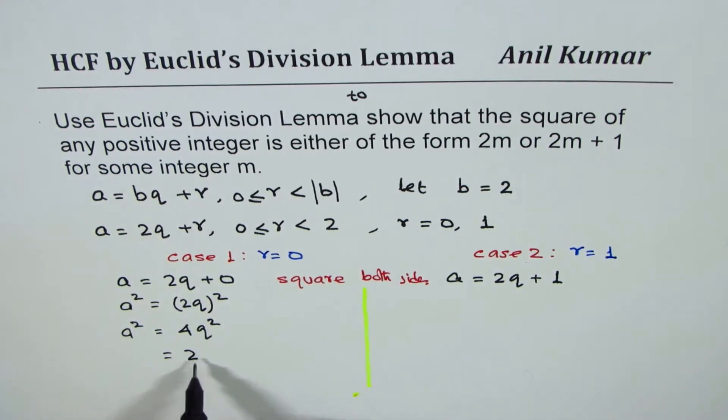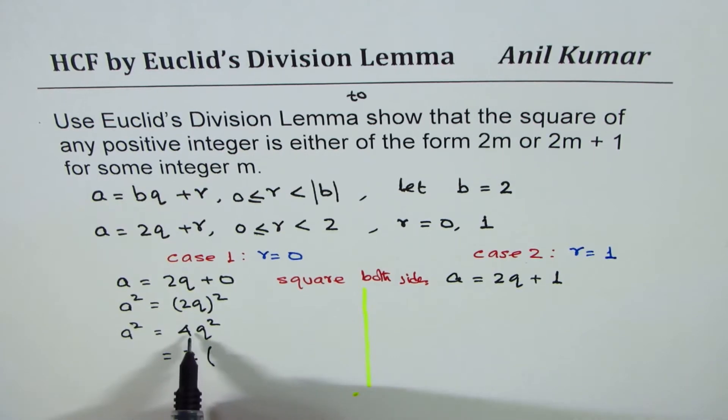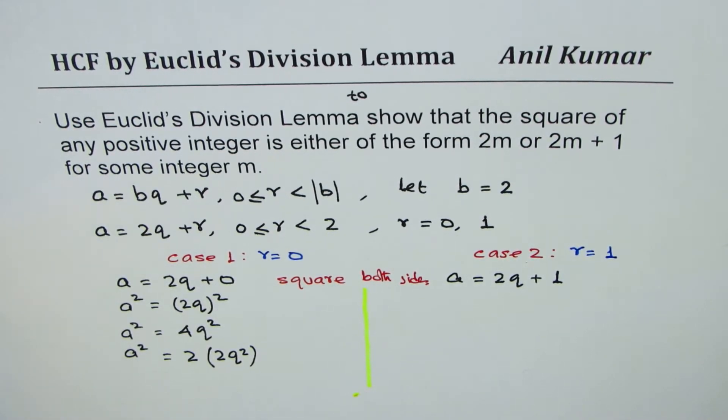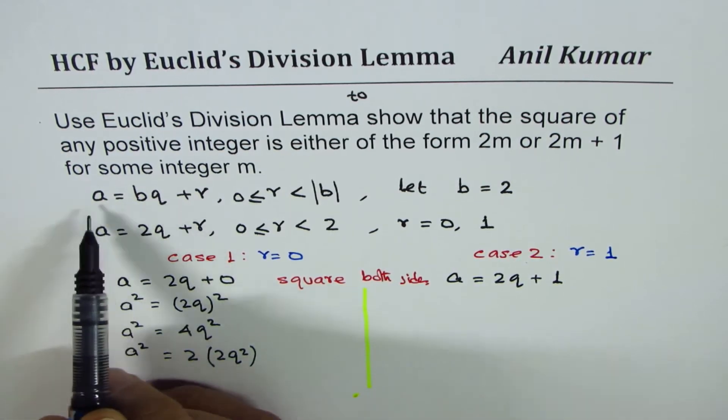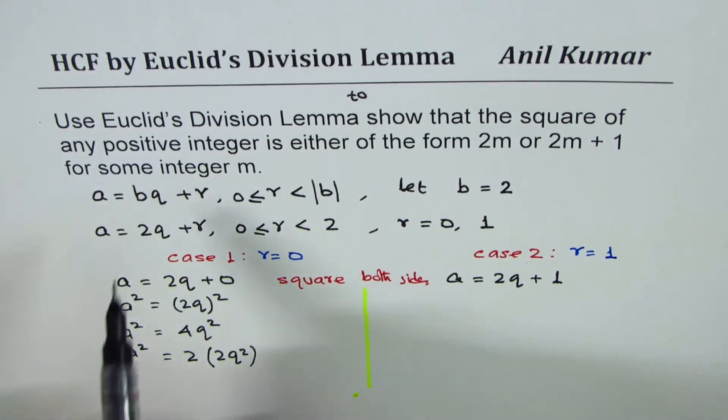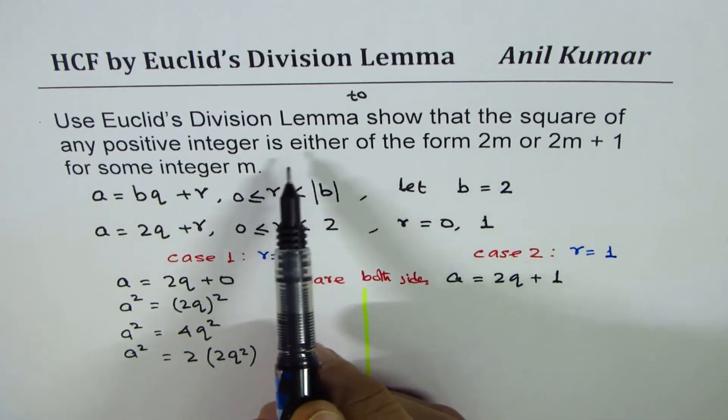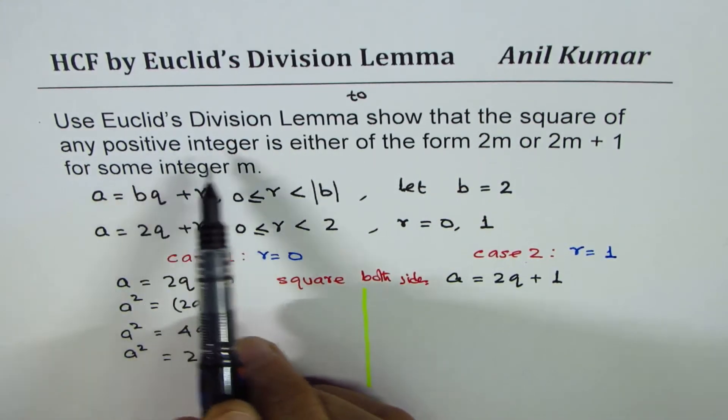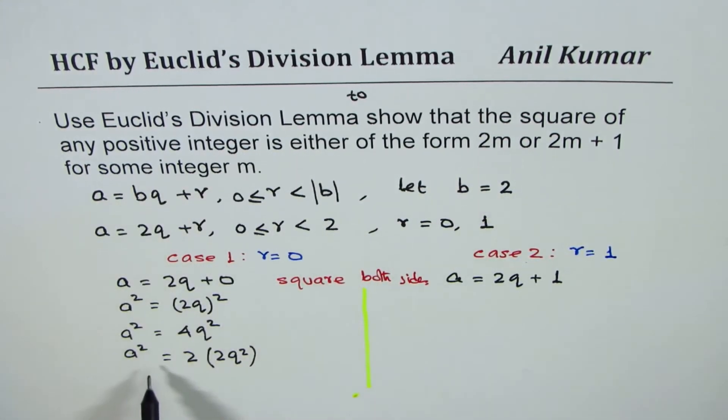Taking 2 common, within brackets I get 2q². What are we trying to say here? Since we are talking about positive integers, we are saying that a² is twice some number.